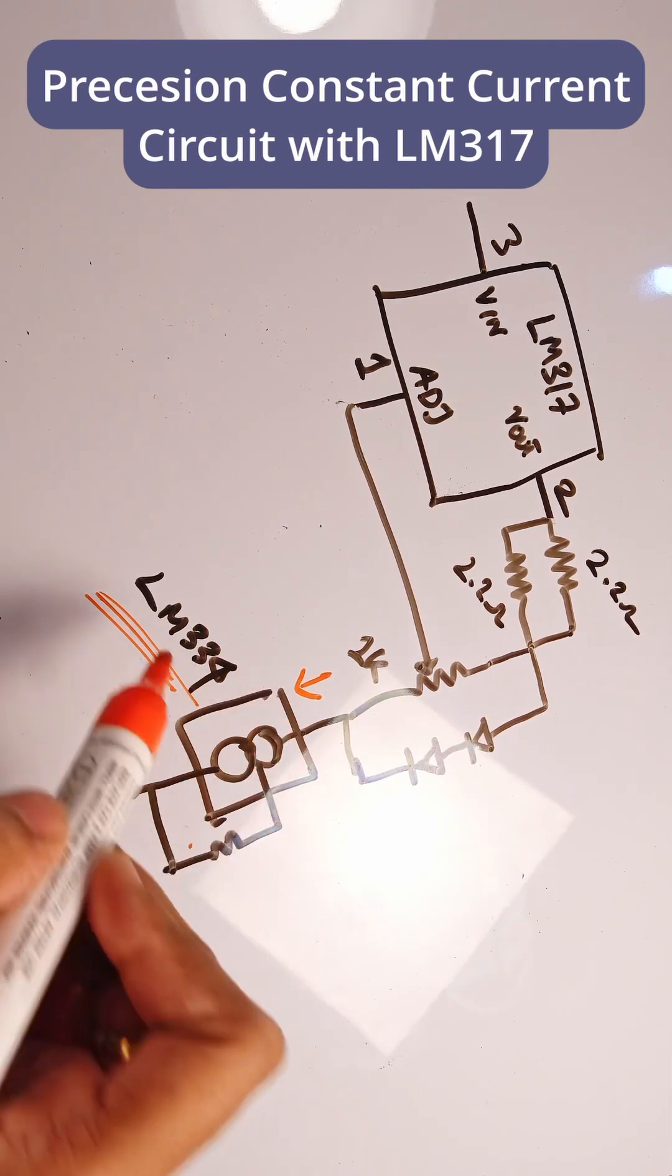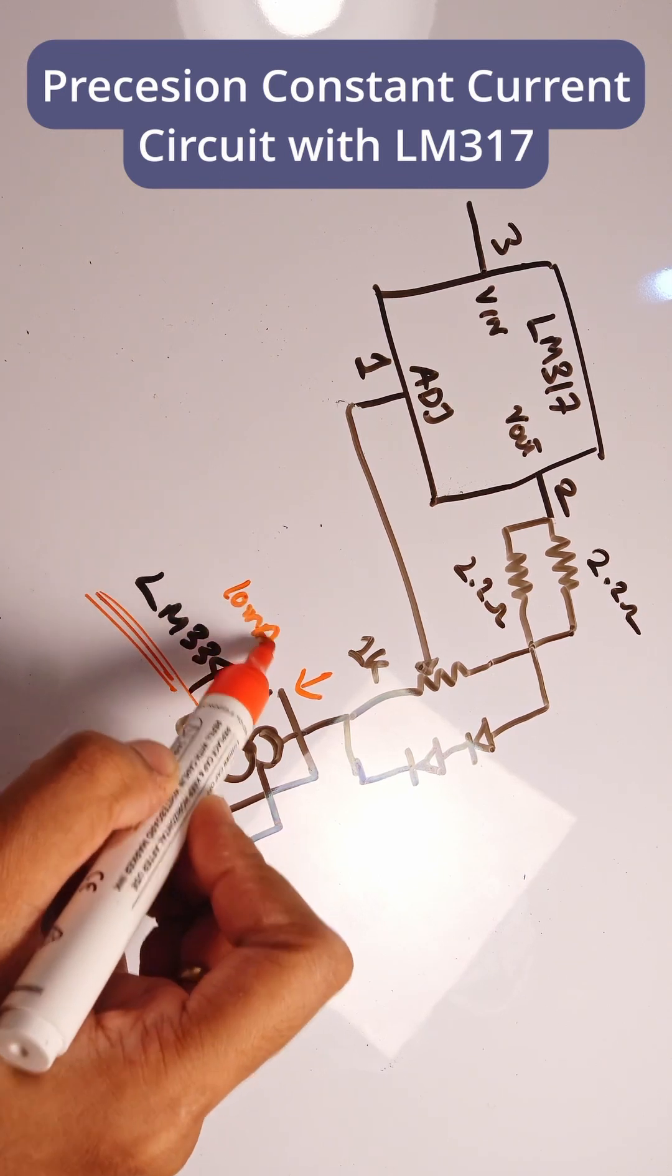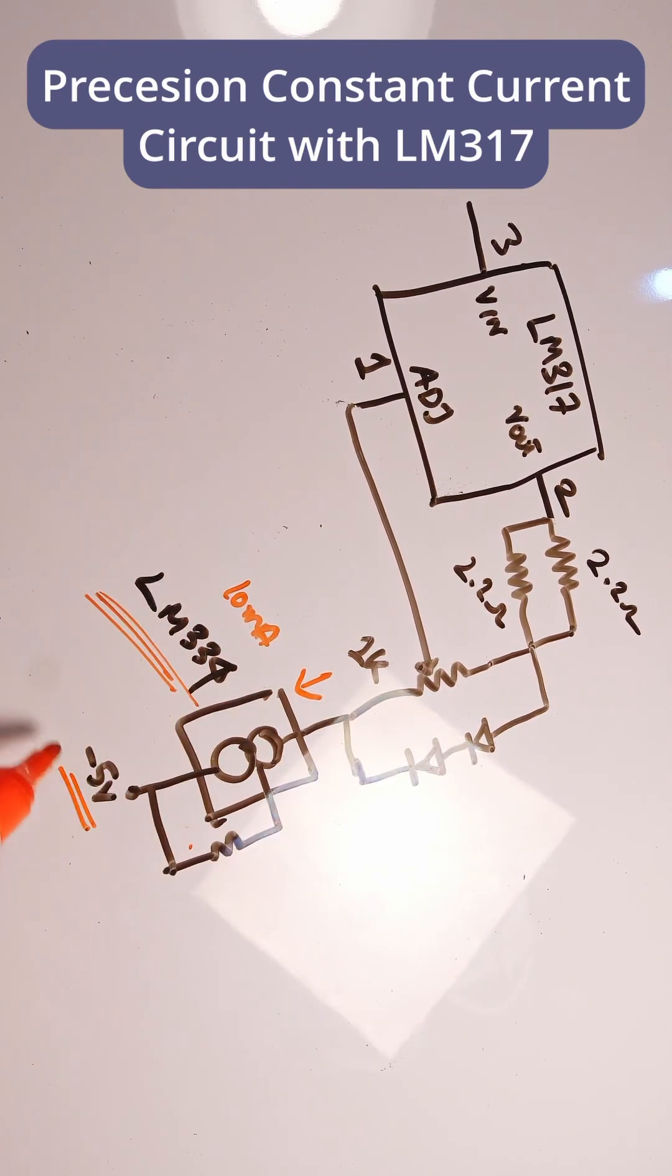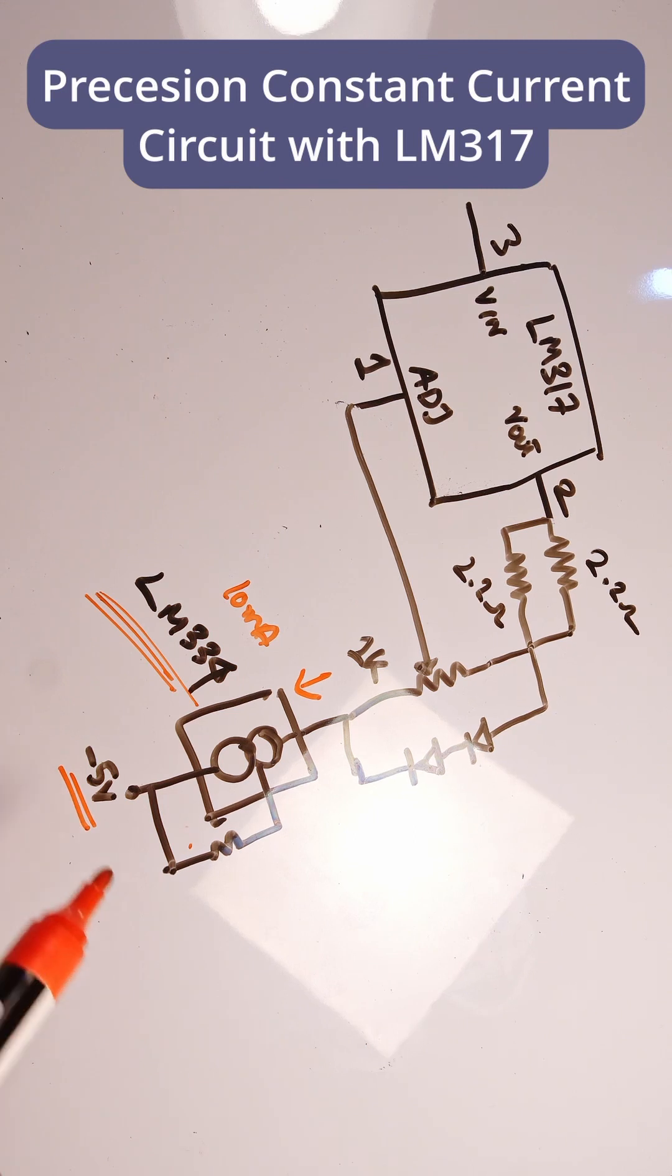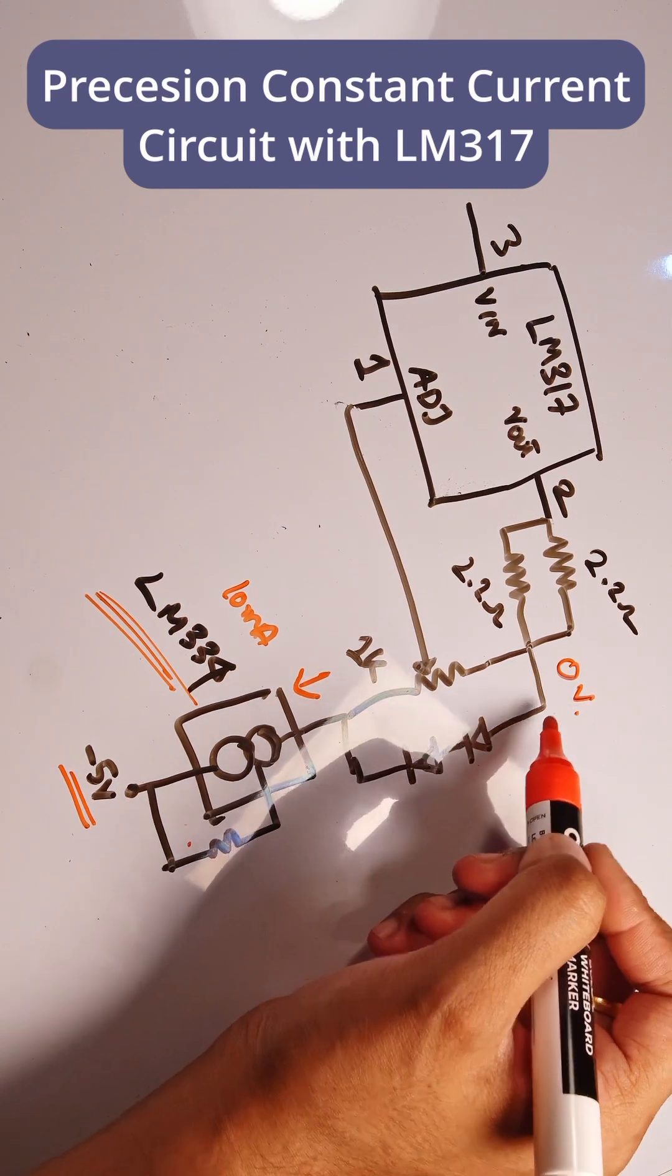Just for example, suppose we take 10 milliamps flowing. The best part is that since this is minus 5 volts, this is a negative voltage. Even if we have 0 volts at this point, we can still pull current because this is at lower potential and this is at higher potential.